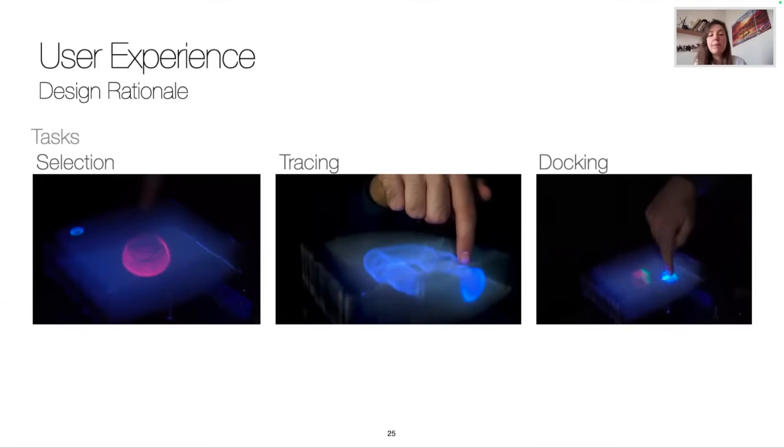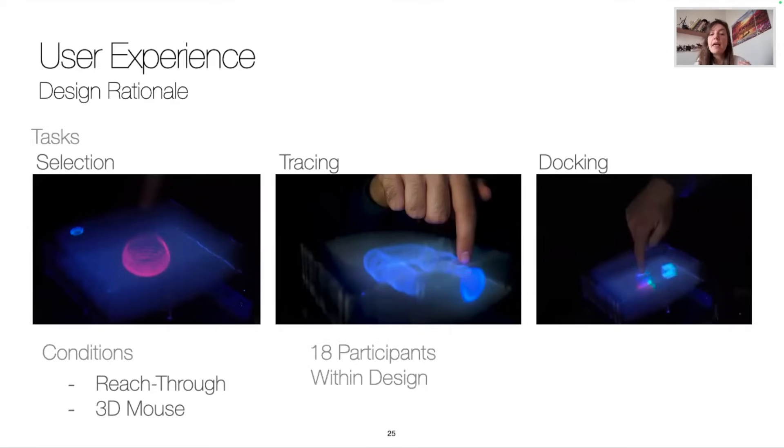In all the tasks, we compared the two conditions: reach-through and 3D mouse. We recruited 18 participants and used a within-subjects design. We measured for each of them the completion time, and for the tracing and docking, we captured the coordinate of the finger position in the display volume to measure accuracy. At the end of each condition, participants filled a NASA TLX questionnaire for measuring cognitive load.